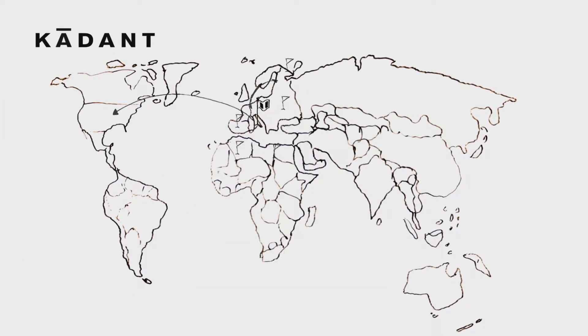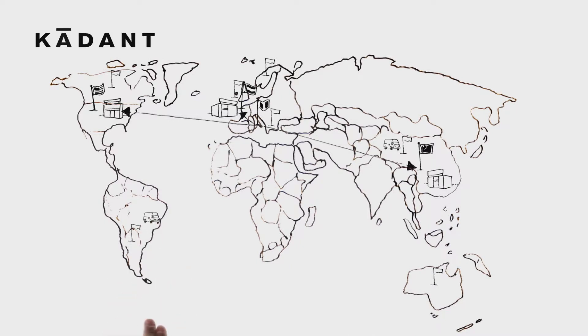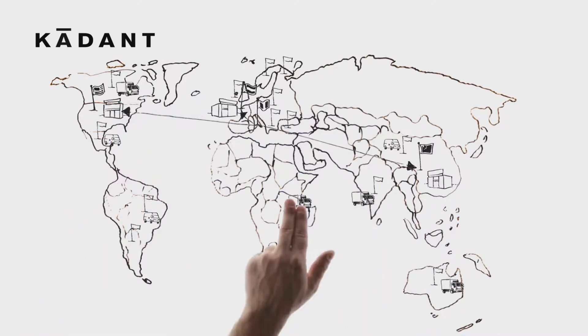The Cadent group has four manufacturing facilities with sales offices located in every major industrial region of the world to assure product availability, service and technical assistance whenever and wherever it's needed.